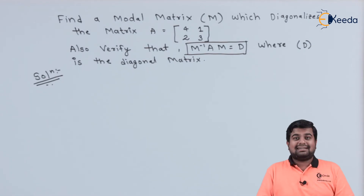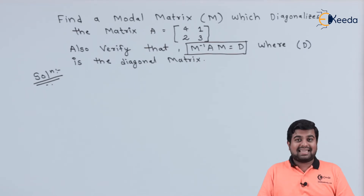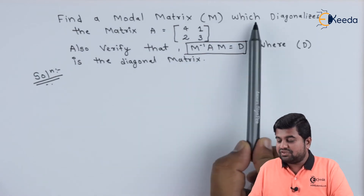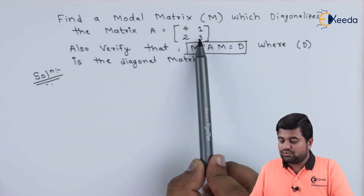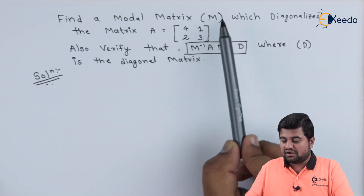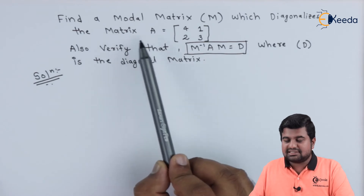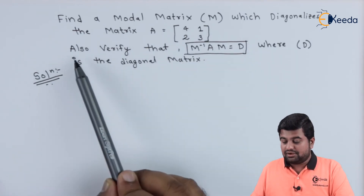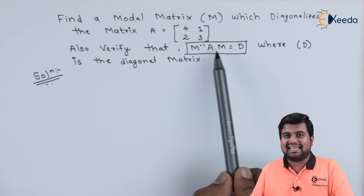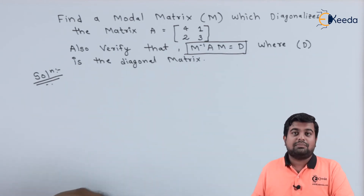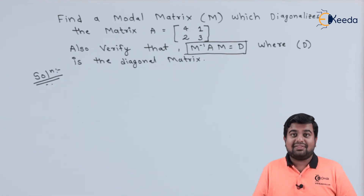Let us understand what is modal matrix and how to diagonalize a given matrix A using this example. Find a modal matrix M which diagonalizes the matrix A = [[4, 1], [2, 3]]. We are supposed to find the modal matrix M which diagonalizes this matrix A, and also verify that M inverse into A into M equals D, where D is the diagonal matrix. So let us find eigenvalues and eigenvectors first, then construct modal matrix M and diagonal matrix D.